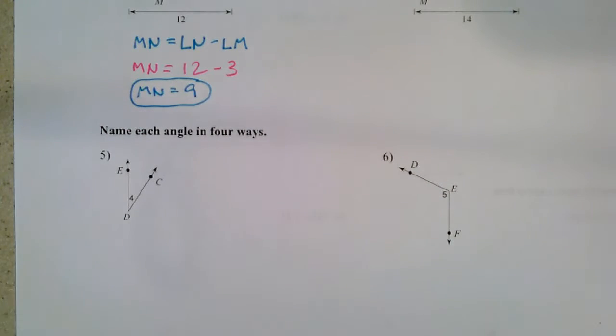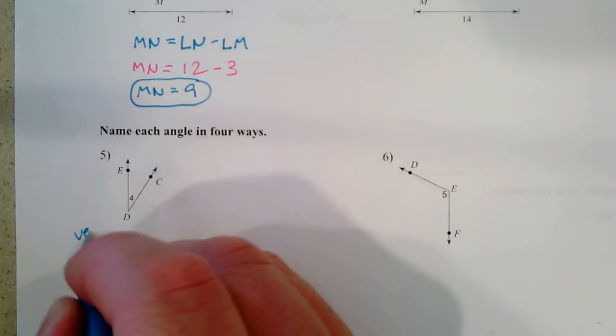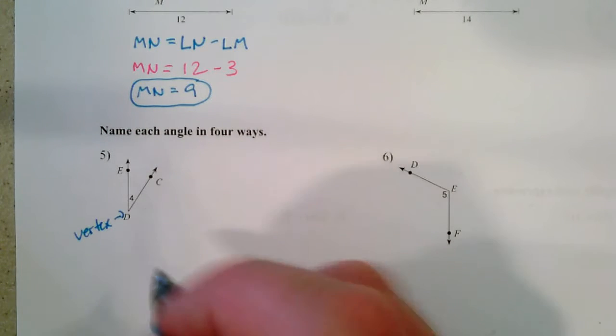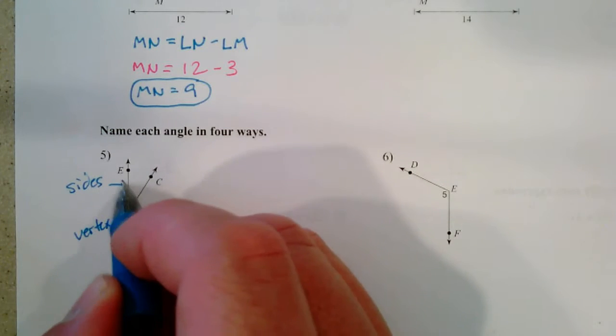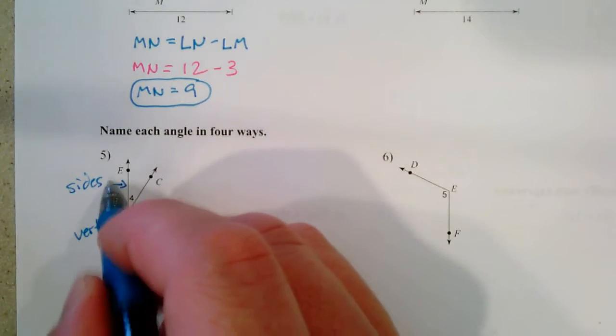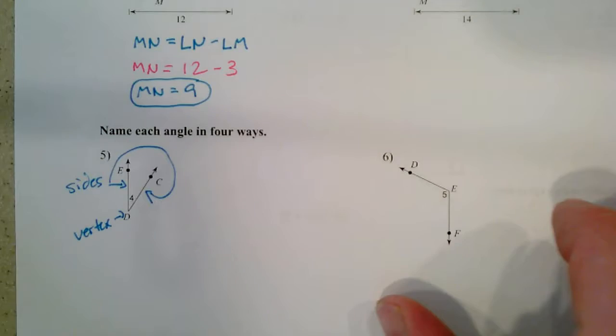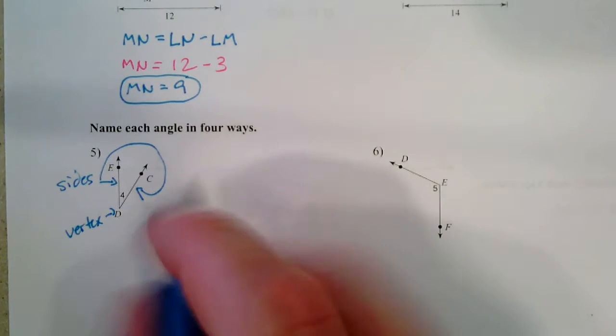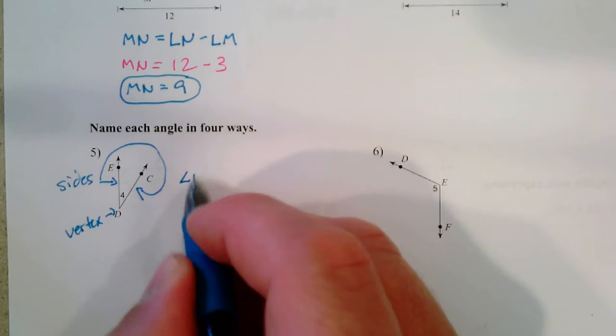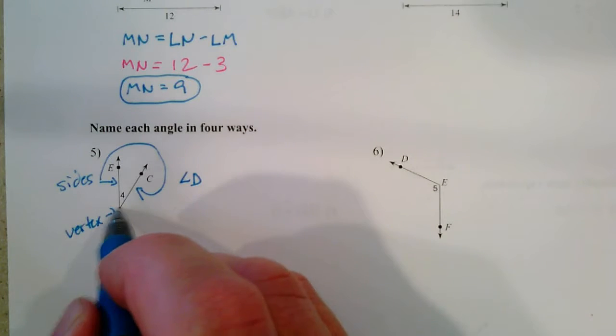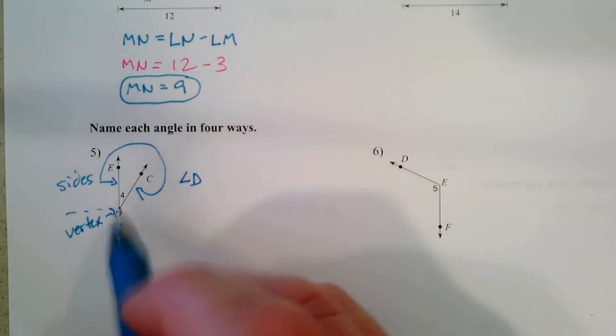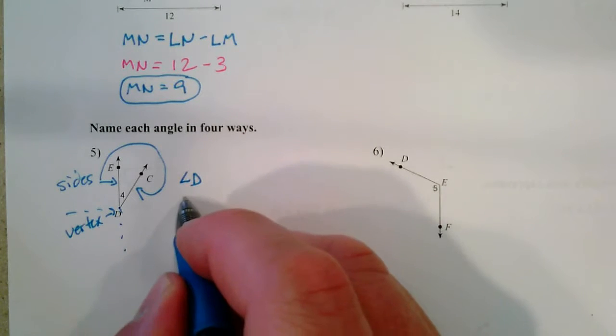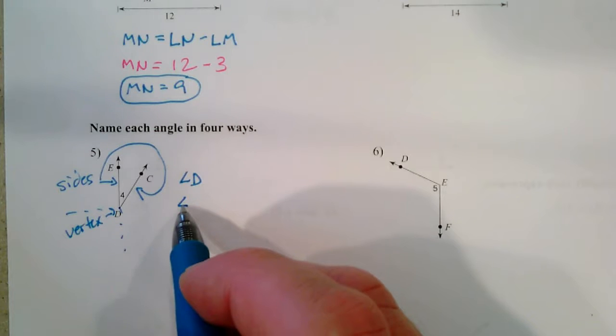name each angle in four ways. We've got this point here, that's the vertex, and the sides are right here. We're going to name the angle first by the vertex. We'll call it angle D. Of course, if there were other rays coming out of here, we'd have to be more specific. By the way, this little symbol means angle.